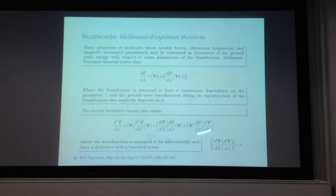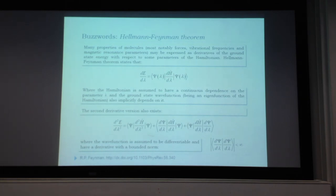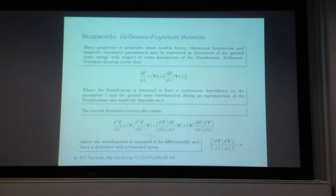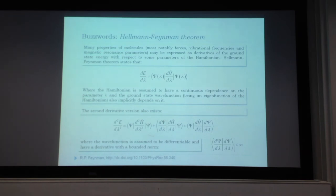A second derivative expansion also exists, but requires differentiating the wave function as well as the Hamiltonian, which is considerably more expensive. In the Hamiltonian, parameters usually appear linearly, making differentiation straightforward. However, the wave function depends on parameters in a highly implicit, non-linear way, making second derivatives much harder to compute than first derivatives.